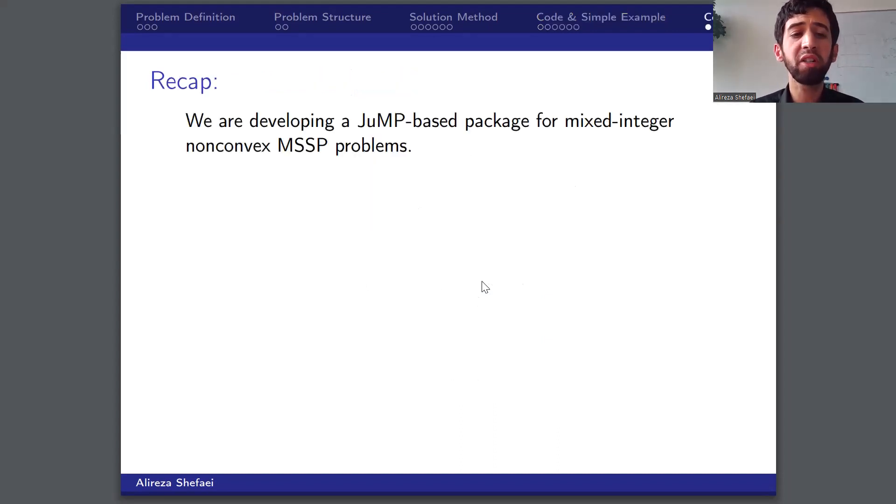To recapitulate briefly, we are developing a JuMP-based package for solving multi-stage stochastic programming problems with mixed-integer variables and non-convex situations from the second stage onwards. The products of this work can be used in three different ways. First and most importantly, it can be used as a solver for non-convex sequential decision problems under uncertainty.